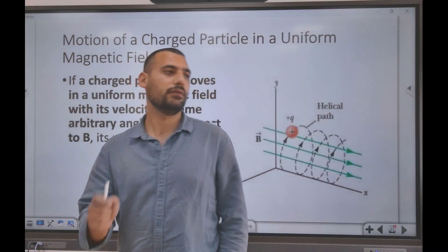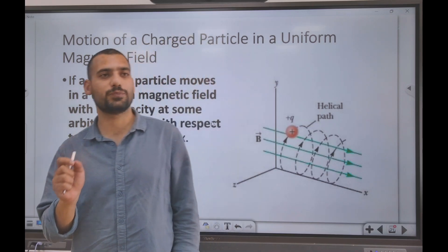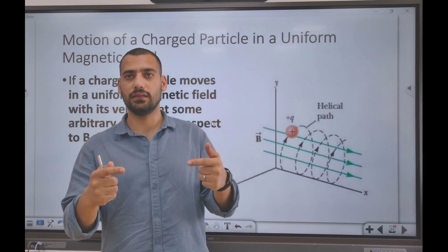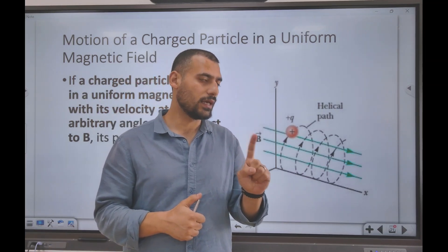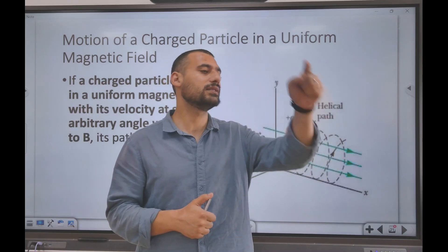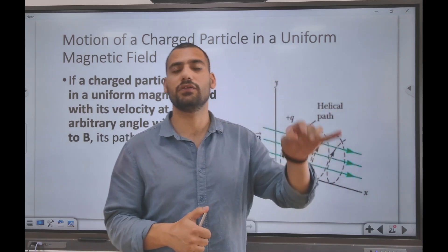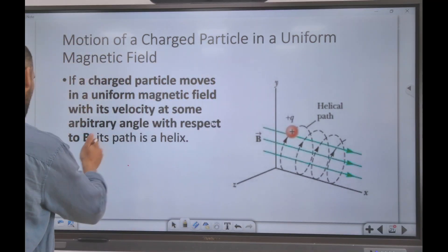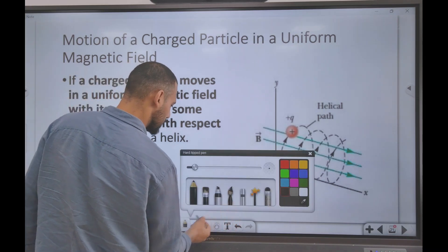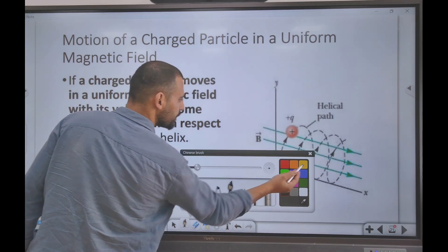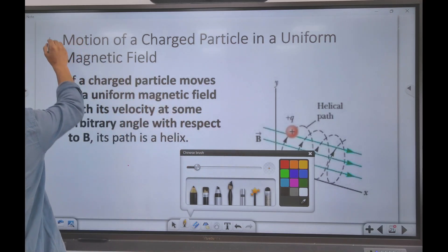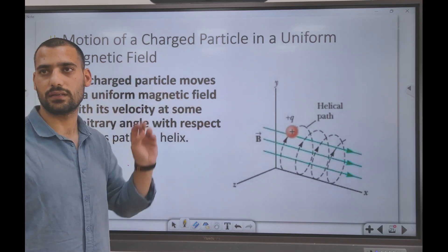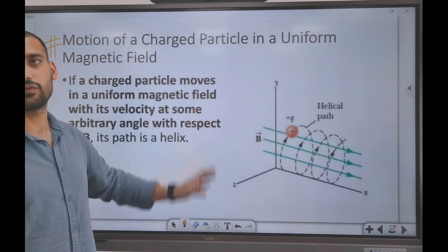Yesterday we discussed when a charged particle is fired inside a magnetic field at 90 degrees, the path the charged particle follows will be a circular path. Today we have a charged particle fired at some angle other than 90 degrees inside a uniform magnetic field. What happens here was pending from yesterday.